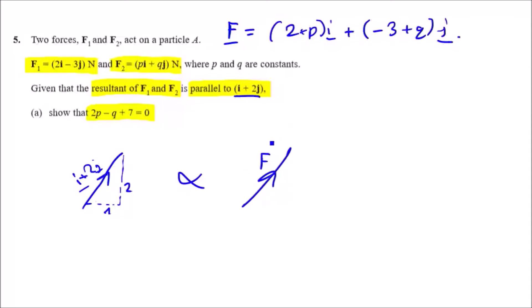The one thing to note with parallel vectors: they don't necessarily have to be the same size. All you have to be focused on is that they need to be moving in the same direction. Essentially, we could say that F is probably some scale factor of i plus 2j, probably bigger or smaller.